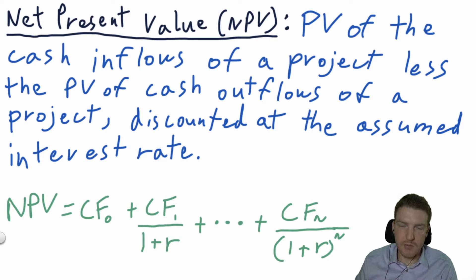Let's make NPV, IRR, and discounted cash flows as easy as possible to understand. The net present value, or NPV, is the present value of the cash inflows of a project less the present value of cash outflows of a project, discounted at the assumed interest rate.